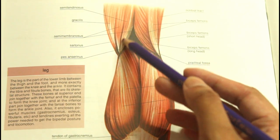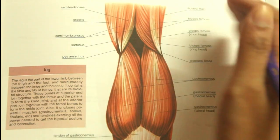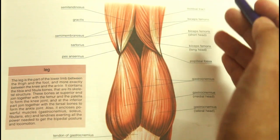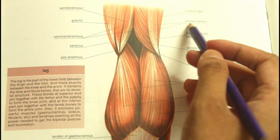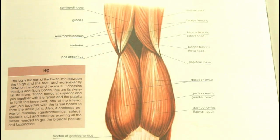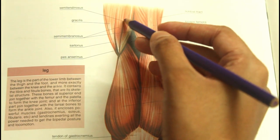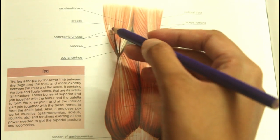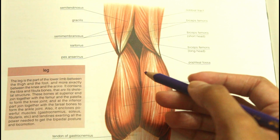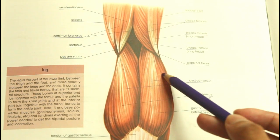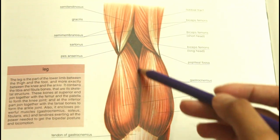Let's learn about the boundaries of the popliteal fossa. The medial aspect is towards the midline of the body and the lateral aspect is away from the midline. Superolaterally, the fossa is bounded by the biceps femoris muscle. Superomedially, it is bounded by the semimembranosus, semitendinosus, gracilis, sartorius and adductor magnus muscles. Inferolaterally it is bounded by the lateral head of the gastrocnemius, and inferomedially by the medial head of the gastrocnemius muscle.